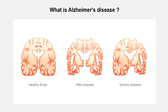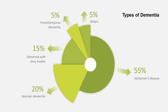What is Alzheimer's disease? Alzheimer's disease involves irreversible neuronal degeneration and is the most common cause of dementia in middle-aged and aged people. Alzheimer's disease accounts for 55% of cases of dementia, with the remainder accounted for by vascular dementia, dementia with Lewy bodies, frontotemporal dementia, and others.